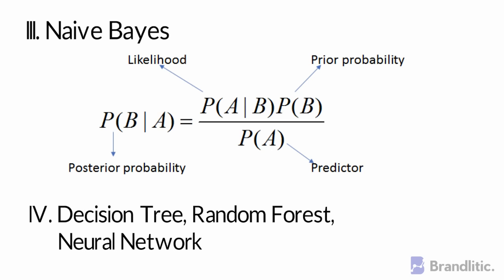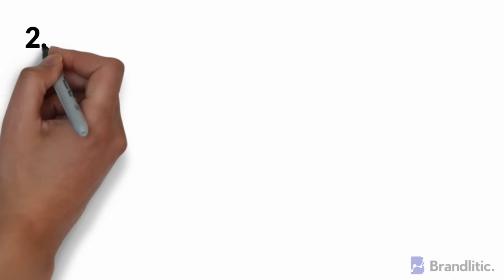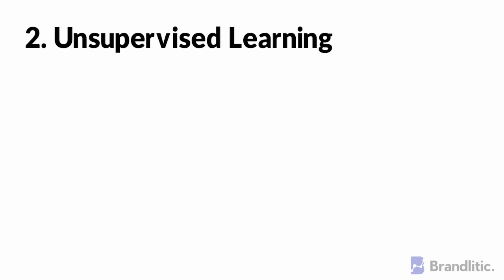Coming up next, Decision Trees, Random Forests, and Neural Networks. These models follow the same logic as previously explained. The only difference here is that the output is discrete rather than continuous.